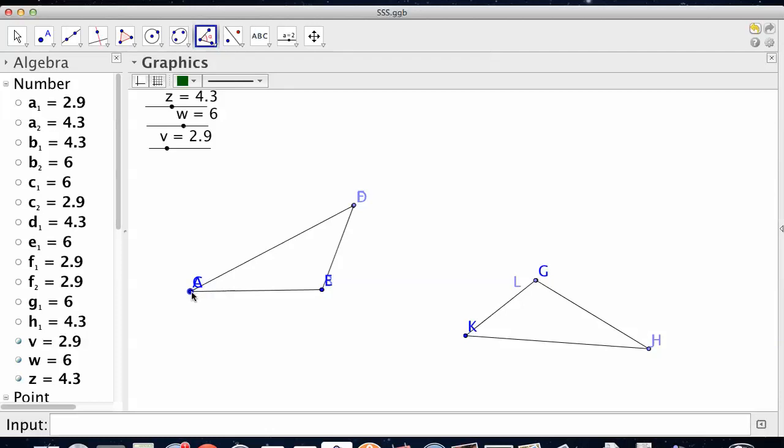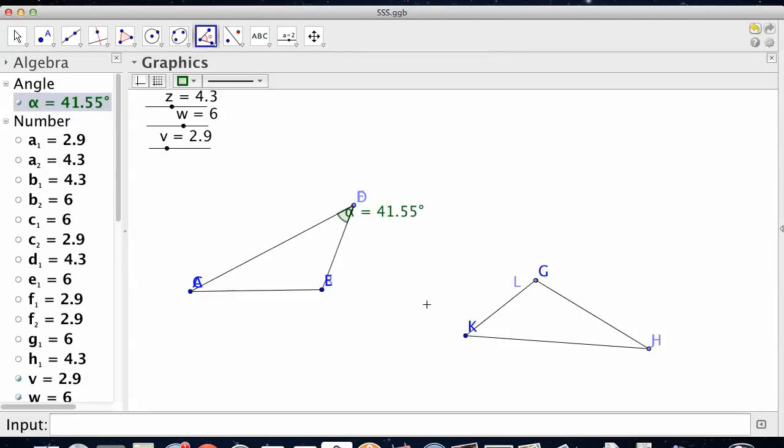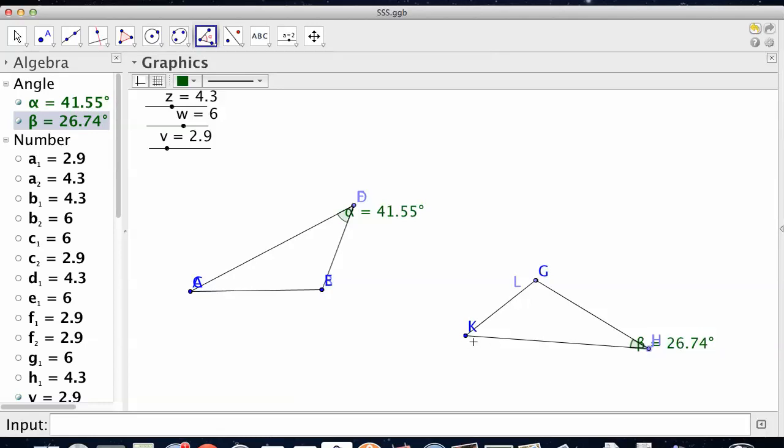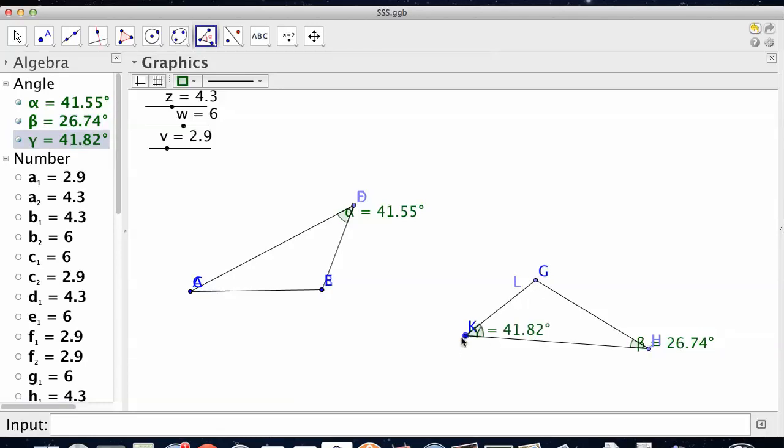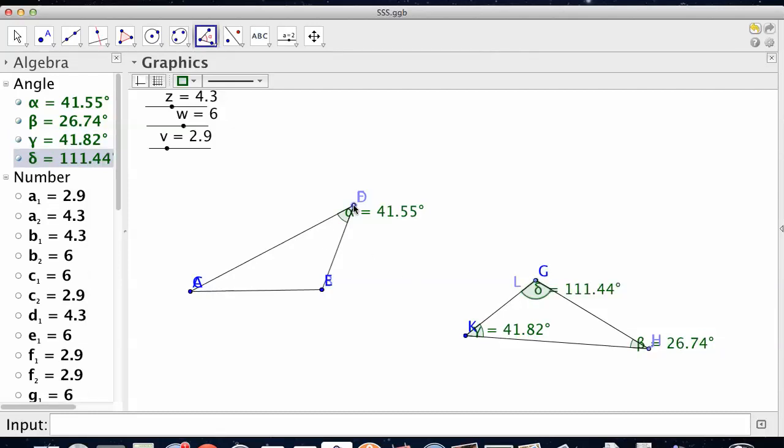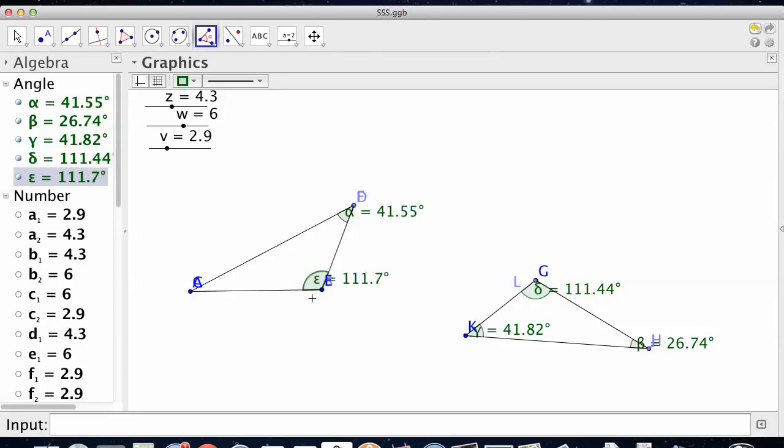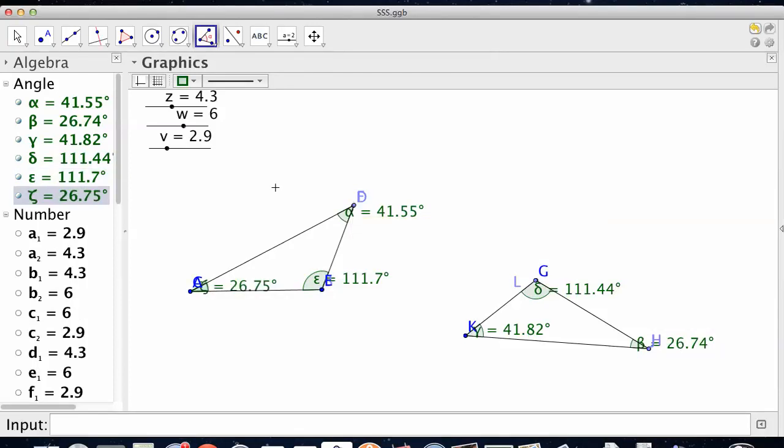Let's measure those angles. 41.5, 26.74, 41.8. Now I'm thinking that 41.82 and the 41.55 are the same. Again, it's not going to be perfect, even though we want things to be perfect. For what I'm trying to do with moving things and not being able to put the dots exactly on, those things are the same. 111, 111, 41, 41, 26, 26. So if you know all three sides, you can make exactly the same triangles. Awesome. We need to know all three sides, we can make congruent triangles.